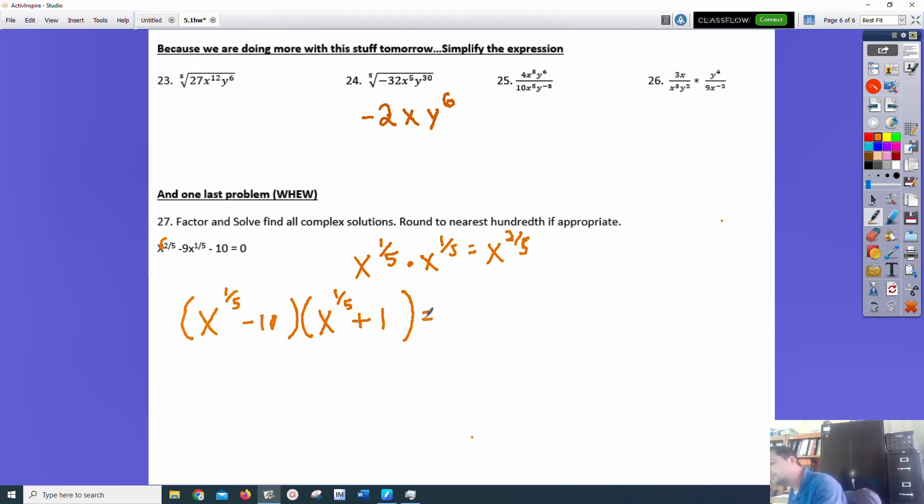So annoying. That's a 0, believe it or not. I'm going to use that 0 product property, the ZPP, if I can even write ZPP.